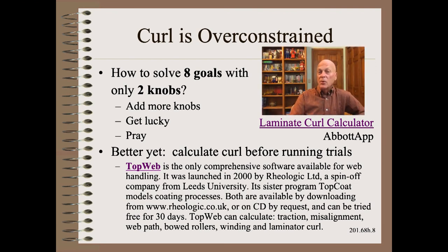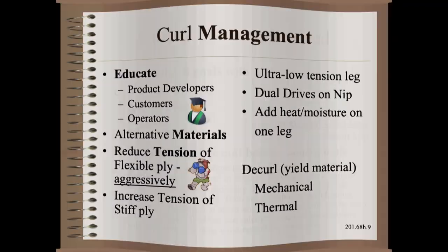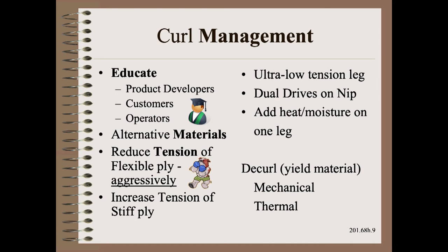That we have problems with curl is quite understandable once you count goals and compare them with the degrees of freedom. Simply put, we are way over-constrained. This is not merely an academic conclusion — the problem is so well known that we have an app for that. Plug in your own numbers and you will see why you are in trouble. Once we truly understand the problem, we are then in a great position to list options that make a difference for this laminator curl type and then to make decisions.